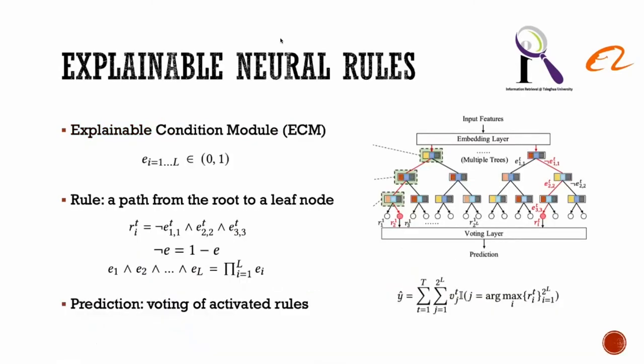We first introduce how to express rules. Let EI denote the output of an ECM, which is between 0 and 1. It can be interpreted as the extent to which the input instance satisfies the expressed atomic proposition. Thus, rules can be expressed by the conjunction of the outputs of the path from root to leaf nodes. Note that only one rule with the largest value in each tree will be activated by each input instance. The activated rules of all trees will be aggregated via voting weights to output the final predictions.